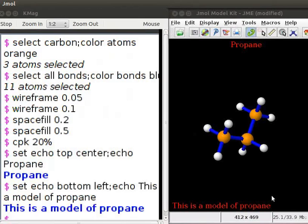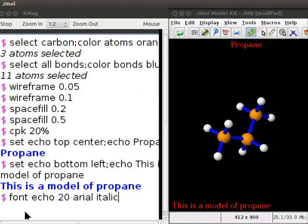It is also possible to change the color, size and font of the displayed text. For example, I want the text to be in Arial italic font. So, at the dollar prompt, type font echo 20 Arial italic. Press Enter. This will convert the text to Arial italic font.